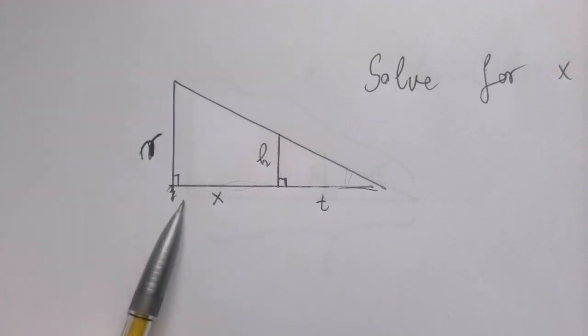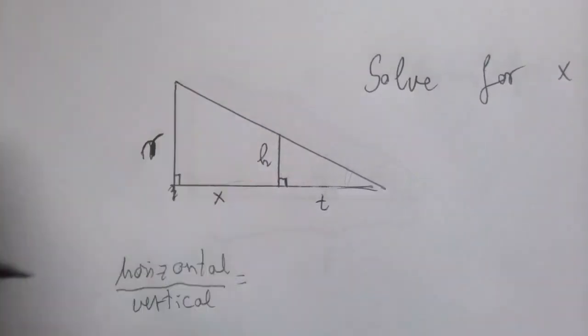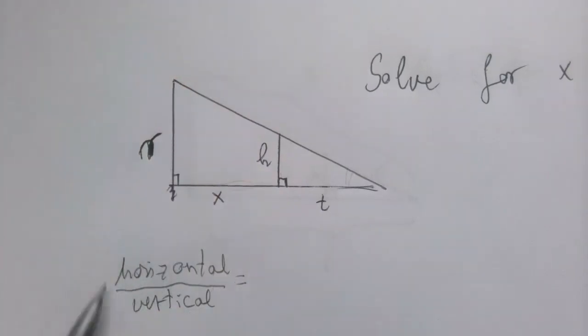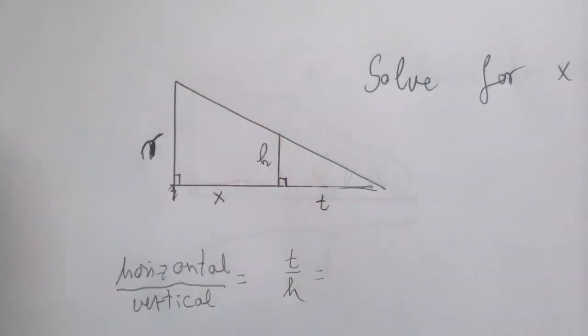X is in the horizontal side of the big triangle. So we are going to say horizontal divided by vertical. This ratio in the smaller triangle is T over H. So far, so good.